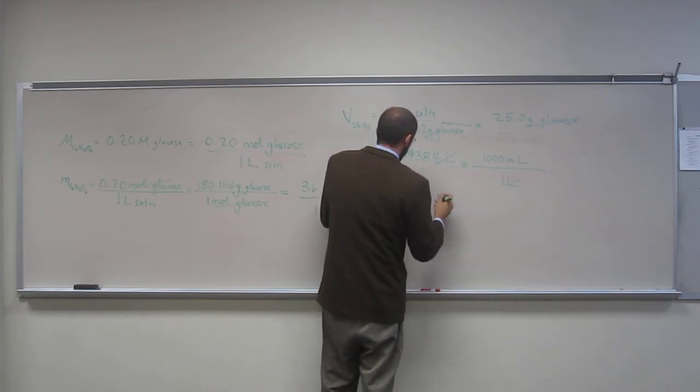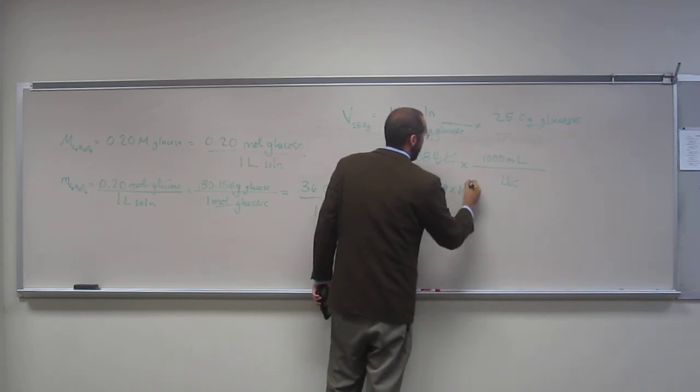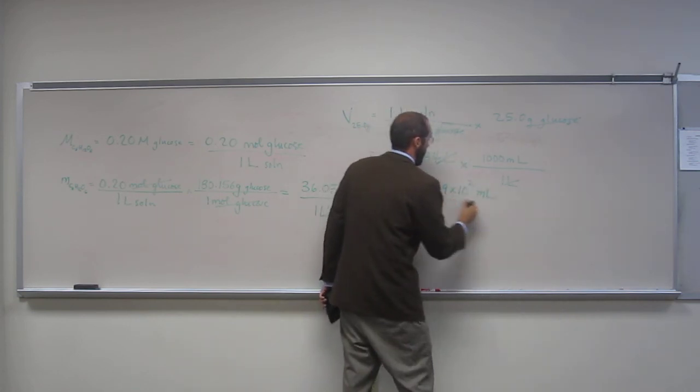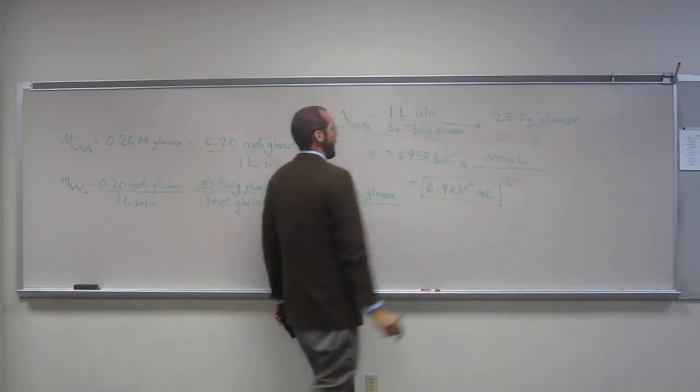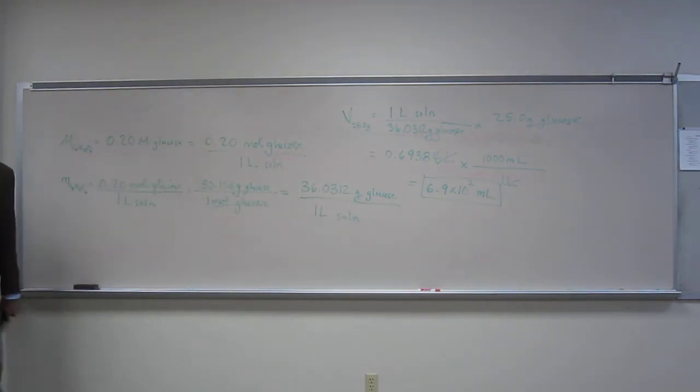But, so, 6.9 times 10 to the 2. Right? And why did I only do it to 2 sig figs? Because we started with 2 sig figs.